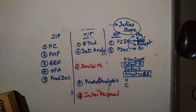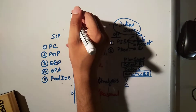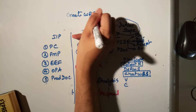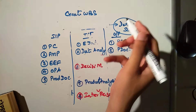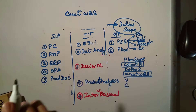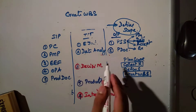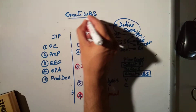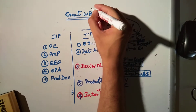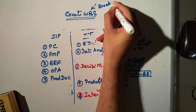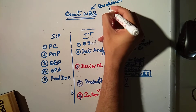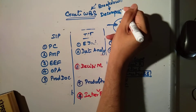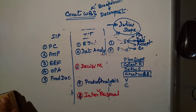Welcome back. In this class I'm going to teach you something called Create WBS — inputs, tools, and techniques, outputs. In the last class we learned define scope, project charter, and related inputs. In Create WBS, WBS stands for Work Breakdown Structure. Breaking down is also called decomposition, so one tool and technique should be decomposition.